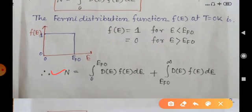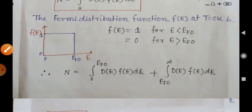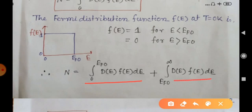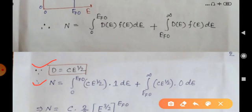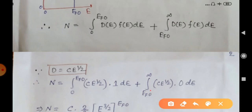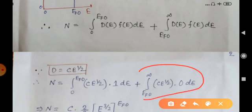We divide the integration from 0 to infinity into two parts: 0 to Ef0, and Ef0 to infinity. So n equals the integral from 0 to Ef0 of D(E)·F(E)·dE plus the integral from Ef0 to infinity of D(E)·F(E)·dE. Using D(E) = C·E^(1/2), and since F(E)=1 in the range 0 to Ef0, the first term becomes the integral of C·E^(1/2)·dE. For Ef0 to infinity, F(E)=0, so the second term equals zero.